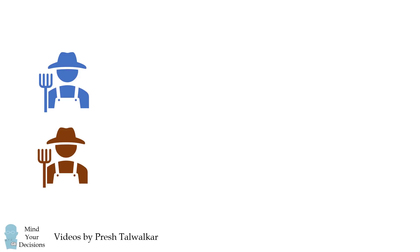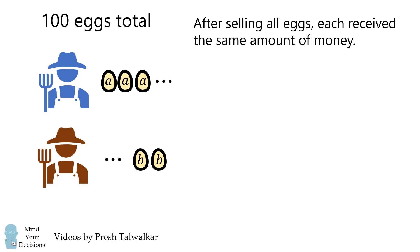Two farmers bring a total of 100 eggs to market. Each farmer sets an individual price per egg. The two farmers set different prices. After selling all eggs, each farmer received the same amount of money as the other.